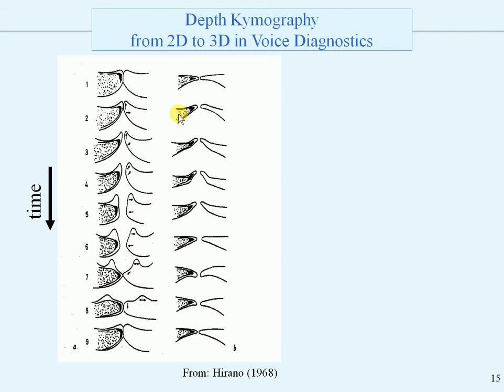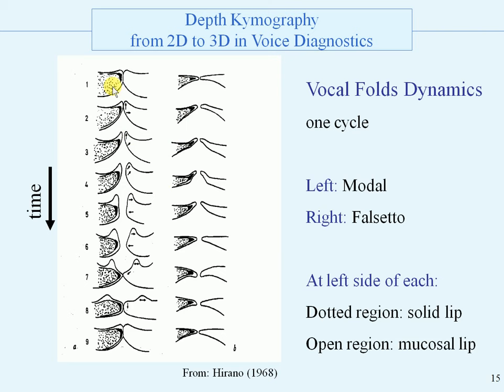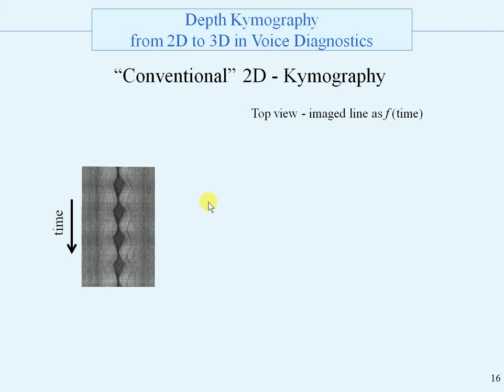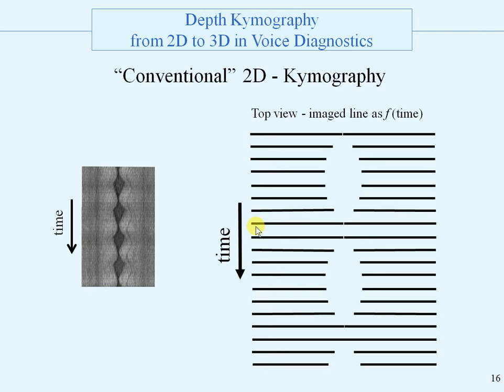What is happening with the vocal folds? This is an overview from Hirano. The left part is for normal voice — the modal voice — and the right part is for falsetto voice, for high pitch. On the left side of each figure, the dotted region is the solid tissue and the open region is the mucosal tissue, the mucosal lip. Here is the top view and the image line as a function of time: glottis opening, closing, opening, closing, etc.